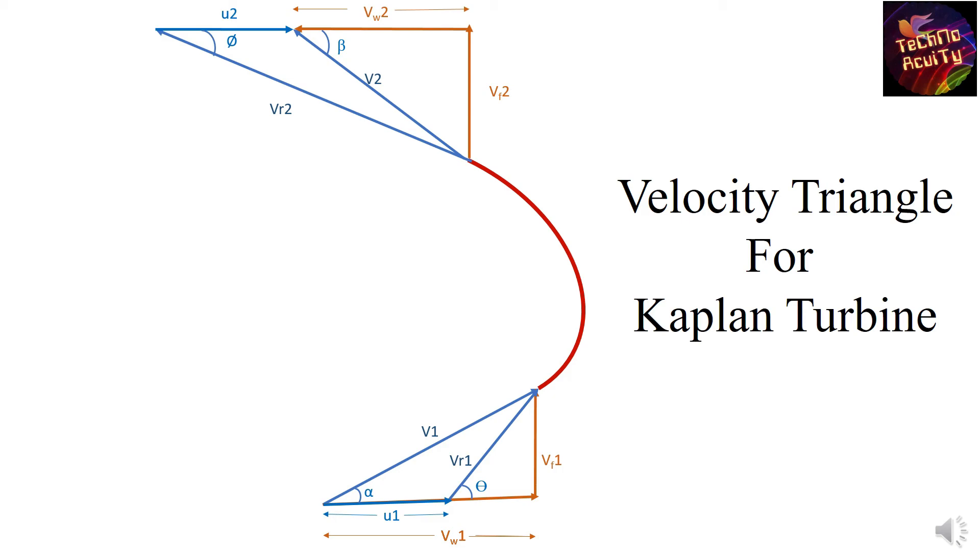This triangle can be modified as per the requirement of designs or the data available in the numerical. This is a generalized velocity triangle for any type of reaction turbine.